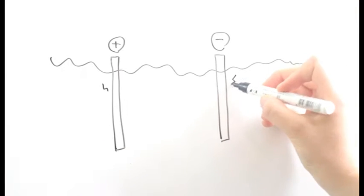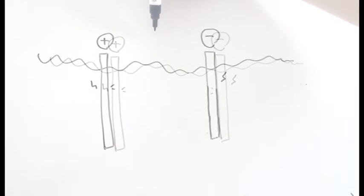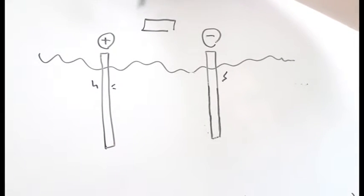Since this isn't a natural process, we provide energy to get the materials to do what we want them to do. So in the cells we work with, we provide energy to force these two materials to become an anode and cathode.